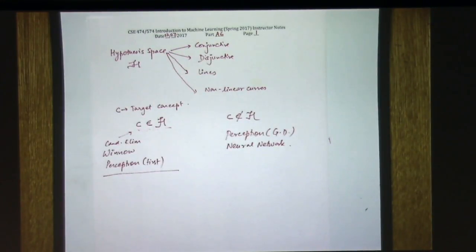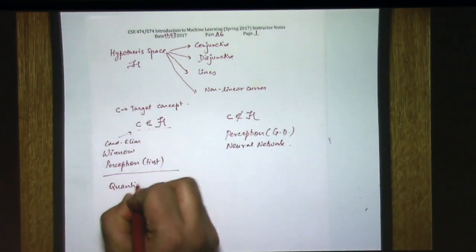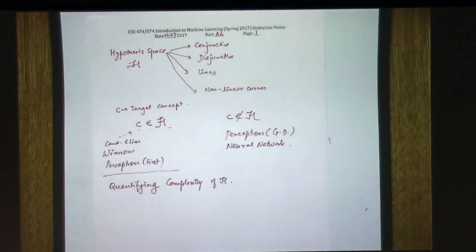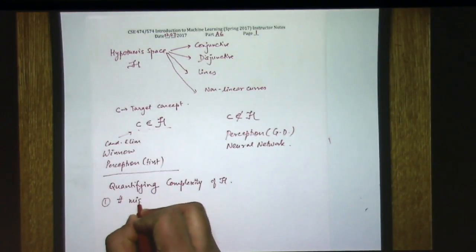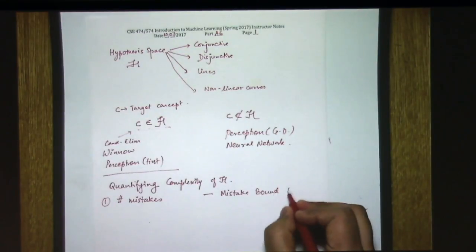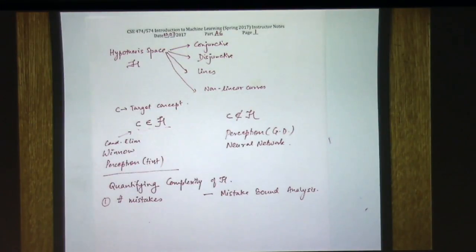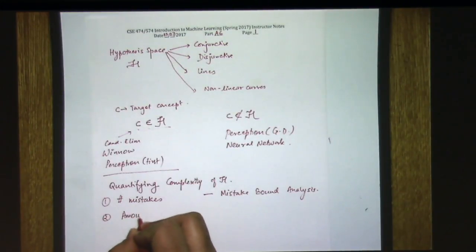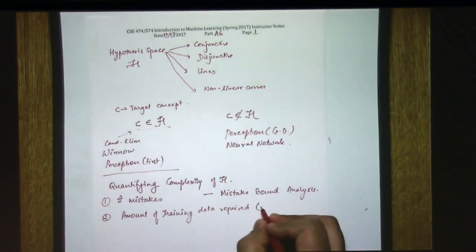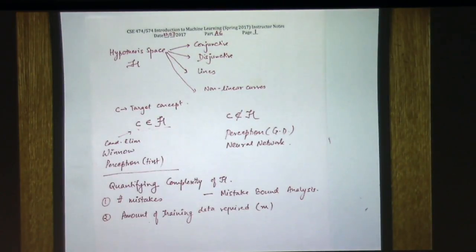The first question that comes up is: how do you quantify the toughness of a hypothesis space — the complexity of H? One measure we've already seen is the number of mistakes an online learner would make, which we analyzed through mistake bound analysis with respect to Winnow. Today we'll look at a different measure: the amount of training data needed, which we call m.